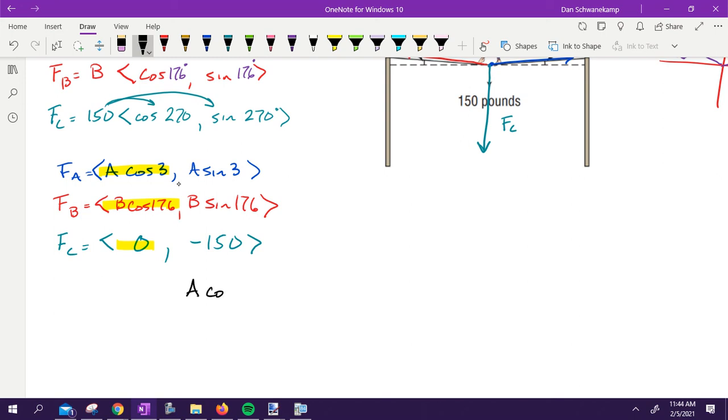So A cosine of three plus B cosine of 176 plus zero, when I add those all together, it's going to get me zero because he's not moving left and right. He is standing still. None of those forces are making him move left and right. How much is he moving up and down?